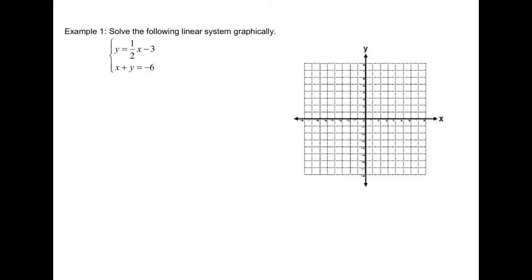Example 1. Let's label line 1 and line 2. For line 1, the equation is already in slope and y-intercept form, so we can define the y-intercept, which is the constant term — the one without the x — which is negative 3. And we can define the slope, which is the coefficient of the x term, which is one half.